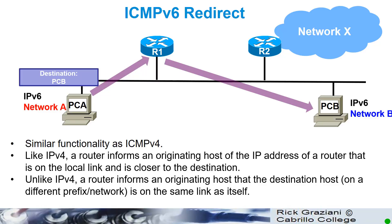Routers use the redirect function to inform the originating host of a better first-hop neighbor to which traffic should be forwarded for a specific destination. Routers use redirect for two major purposes: informing the originating host of the IP address of a closer router on the link-local, where 'closer' is a routing metric function. This occurs when multiple routers are on the same segment and the host chose a non-optimal default router. The second purpose is redirecting the originating host directly to the destination host. The general steps are: host sends unicast to default router; router notes originating host is a neighbor and both are on the same link; router forwards the packet to the next hop; router sends the host a redirect message with the next-hop address in the target address field.